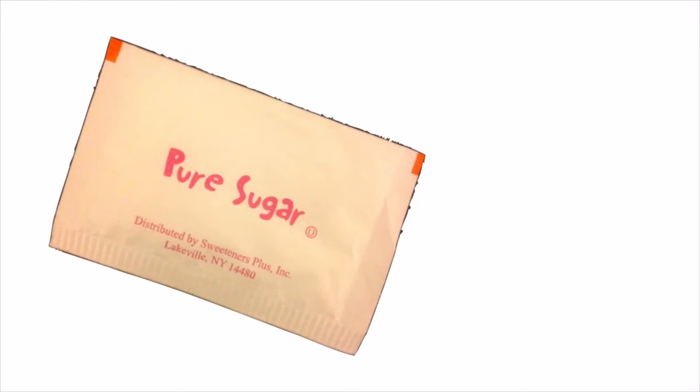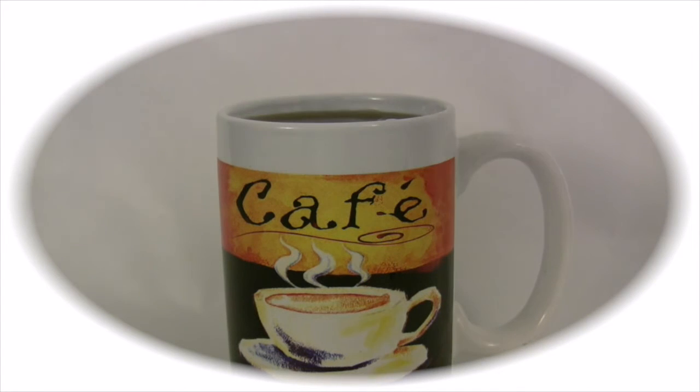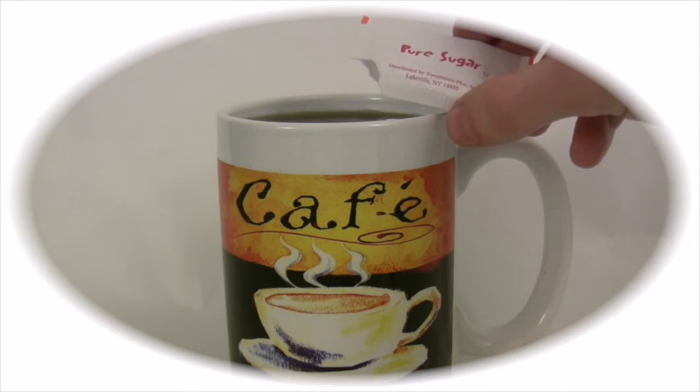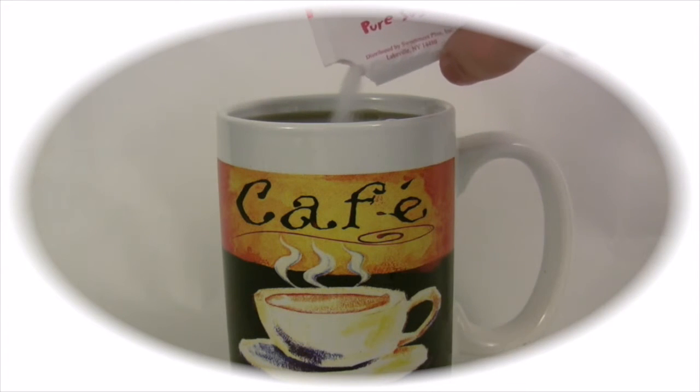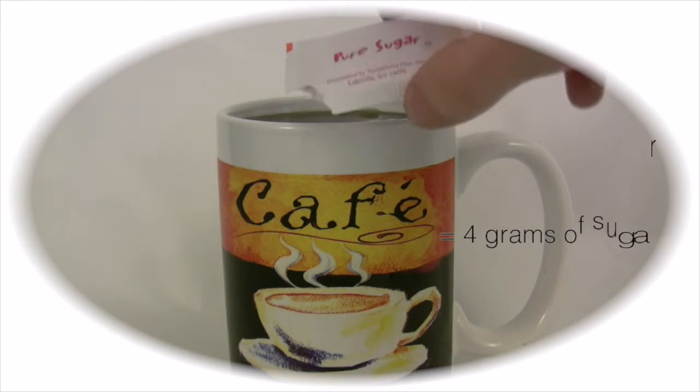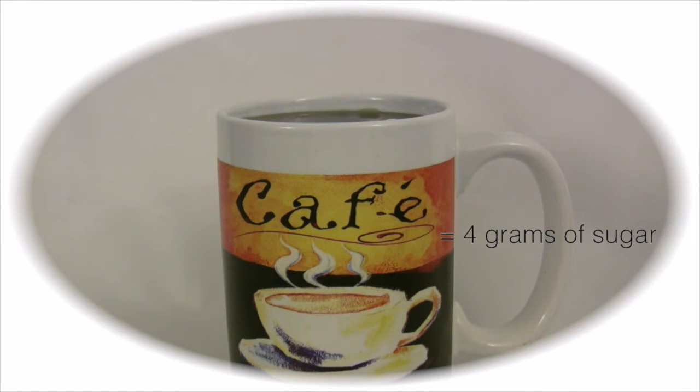This is a sugar packet. It contains 4 grams of sugar. Suppose you get a coffee and add one of these packets. Your coffee will now provide 4 grams of added sugar. Most people feel bad when they add this sugar packet to their coffee because they see the added sugar going into their beverage, since they're adding it themselves. Many people choose to use sugar substitutes instead to feel better.